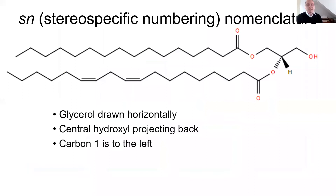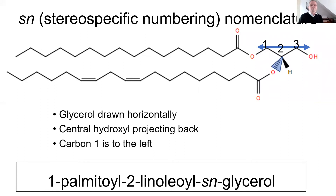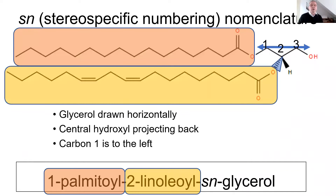A word on stereospecific numbering of lipids. If you draw the glycerol horizontally with the central hydroxyl group projecting behind the plane, the rules are that carbon one is on the left, so the carbons are numbered one, two, three from left to right. This makes a molecule like one-palmitoyl, two-linoleoyl SN-glycerol, where the stereospecific numbering puts the palmitoyl on carbon one, the linoleoyl group on carbon two, and carbon three is three.